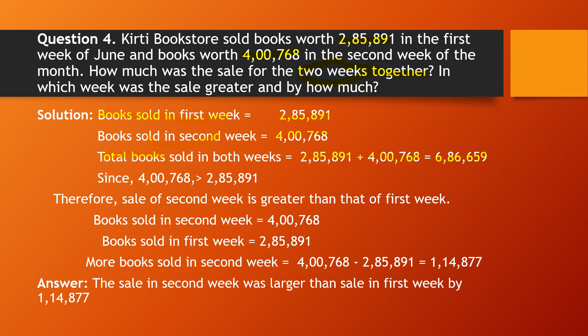For the second part, which week had greater selling? Since ₹4,768 is greater than ₹2,85,891, the sale of the second week is greater. To find by how much, subtract the smaller value from the greater: 4,768 − 2,85,891 = ₹1,14,877. So the second week's sale was greater by ₹1,14,877.